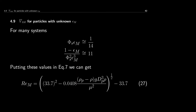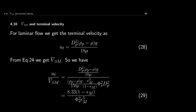For particles with known epsilon_m, empirical data shows that phi_s times epsilon_m is approximately 1/14, and the term (1 - epsilon_m) / (phi_s² · epsilon_m³) is around 11. Putting these values into the equation gives the Reynolds number at minimum fluidization, from which the minimum fluidization velocity can be obtained. Minimum fluidization is one extreme; the other extreme occurs when the fluid velocity reaches the terminal settling velocity and solid particles are carried away.